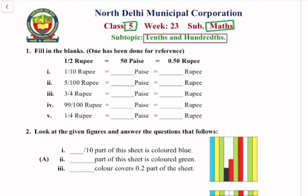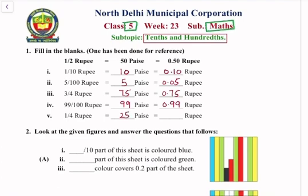First, half rupee is equal to 50 paise or 0.50 rupee. Similarly, 1 by 10 rupees we can write as 10 paise or 0.10 rupee. 5 by 100 rupee is equal to 5 paise or 0.05 rupee. 3 by 4 rupee is equal to 75 paise or 0.75 rupee. 99 by 100 rupee is equal to 99 paise or 0.99 rupee. 1 by 4 rupee is equal to 25 paise or 0.25 rupee.